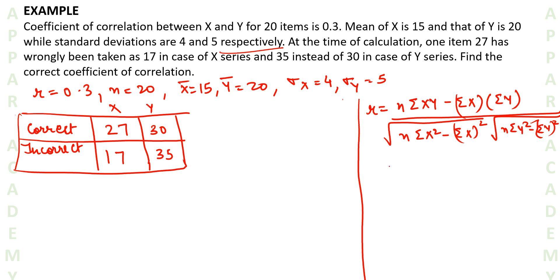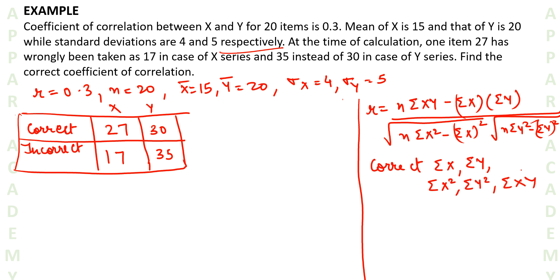In order to apply this formula, what information do we require? We need correct Σx, correct Σy, correct Σx², correct Σy², and correct Σxy. The number of observations is already given and is correct.